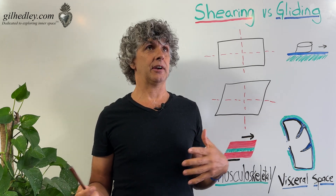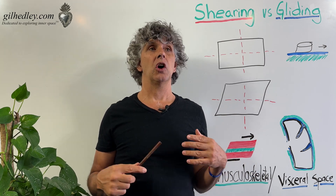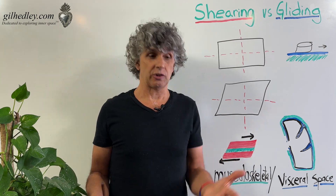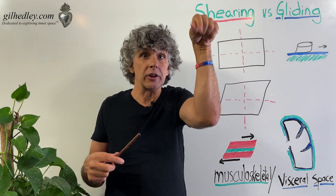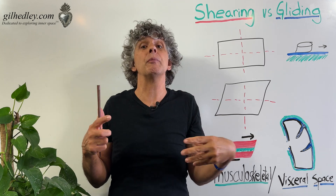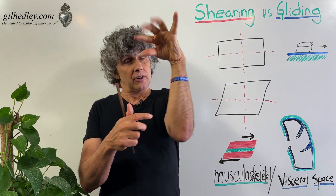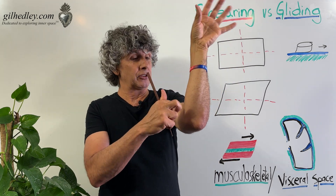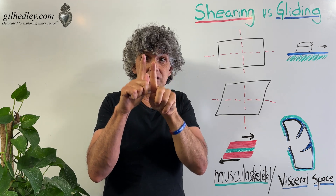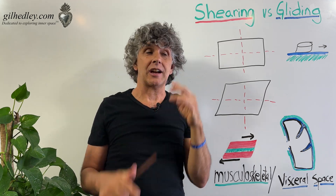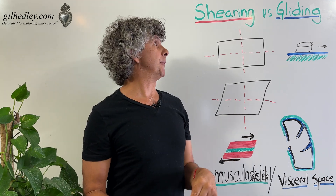How do things that are connected to each other go in different directions in our body? Because it happens all day long in every movement that you do. We have fancy finger movements, and the muscle tissues in your arm are going in different directions. How does that happen?